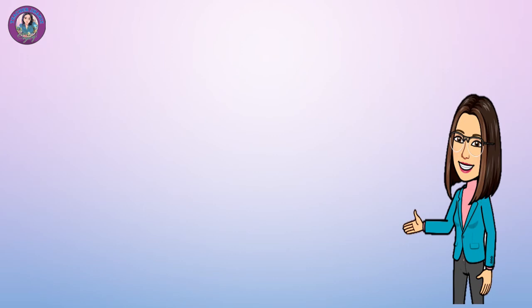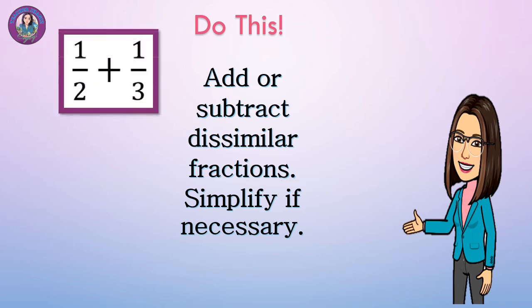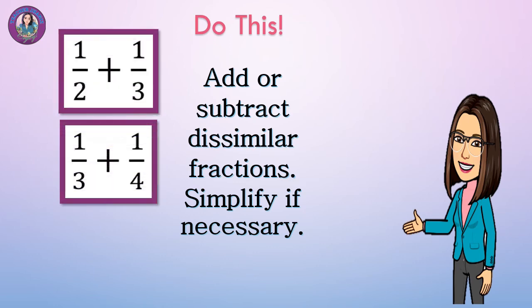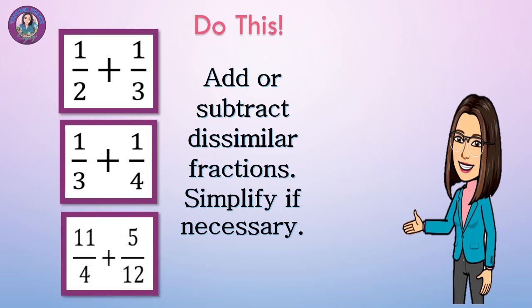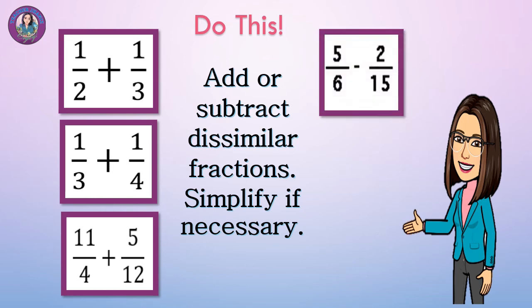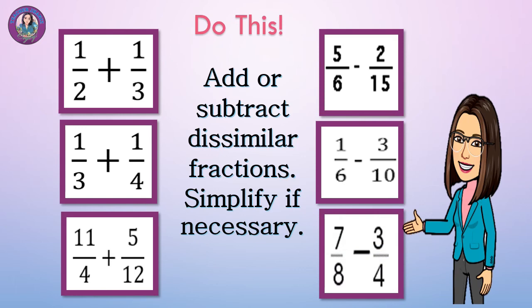I hope you have learned from this presentation. Now for your activity, add or subtract the following dissimilar fractions and simplify if necessary: 1-half plus 1-third; 1-third plus 1-fourth; 11-fourths plus 5-twelfths; 5-sixths minus 2-fifteenths; 1-sixth minus 3-tenths; and 7-eighths minus 3-fourths. Write your answer with a solution in your math notebook.